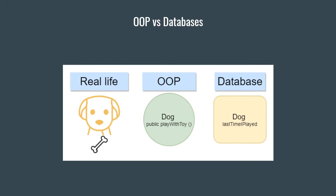In object-oriented programming, objects in code map entities from real life. These objects map their features and current status in properties and state. They take their internal actions in private methods and their external interactions in public methods.